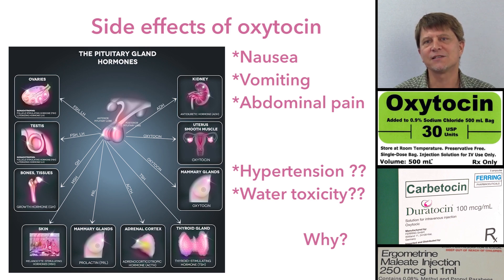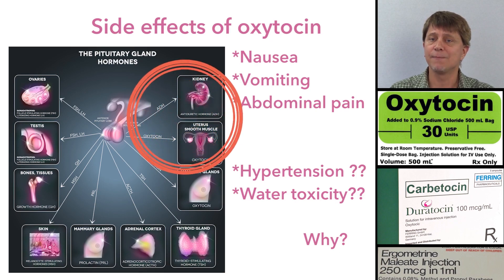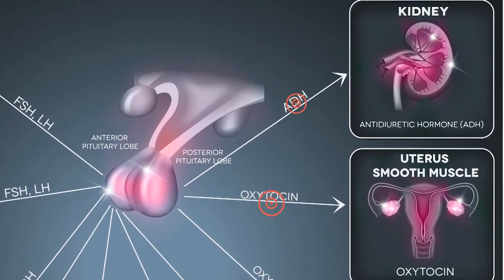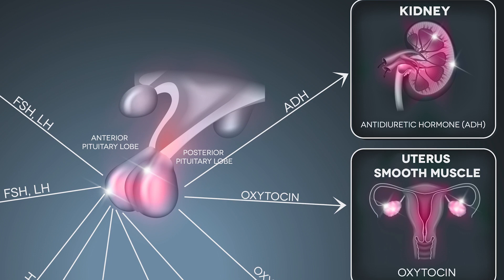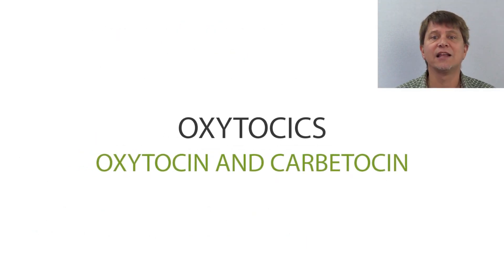A couple of side effects require understanding the other actions of oxytocin. When given in fairly large doses, oxytocin can cause hypertension and water toxicity. The reason is that oxytocin is very structurally similar to ADH, the water saver — both are released from the posterior pituitary gland and share close structural similarity, giving oxytocin some water-saving properties. Oxytocin is also contraindicated when the fetus is in distress or positioned abnormally, and continuous electronic monitoring of the fetus is necessary when it's used during labor.